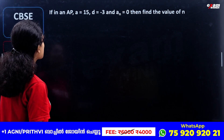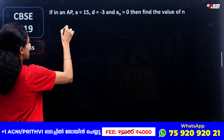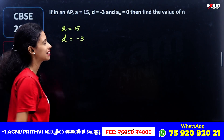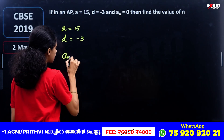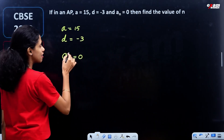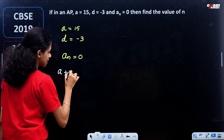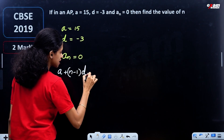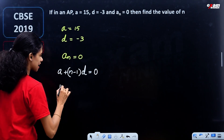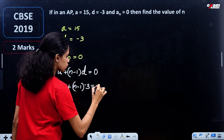If in an AP, a is equal to 15, d is equal to minus 3, and aₙ is equal to 0, then find the value of n. First term is equal to 15. Common difference is equal to minus 3. We need to find the value of n when aₙ is equal to 0. Using the formula: 15 plus n minus 1 into minus 3 is equal to 0.